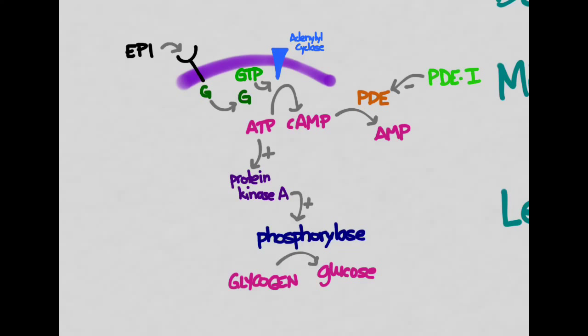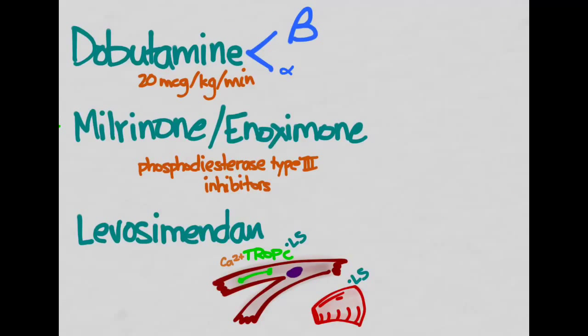The typical method is epinephrine comes in, activates some G proteins, which activates GTP, which activates adenylyl cyclase, which turns ATP into cyclic AMP. Cyclic AMP does all of its good stuff that we know about. Now, cyclic AMP is broken down by phosphodiesterase into AMP. What phosphodiesterase inhibitors do is prevent the breakdown of cyclic AMP to AMP. So now we have this extra cyclic AMP sticking around to do all of its goodness. That's how milrinone and inoximone work.